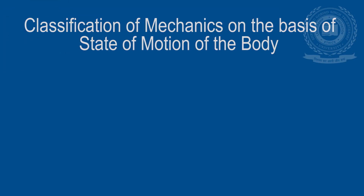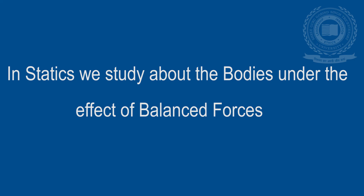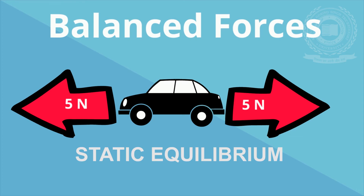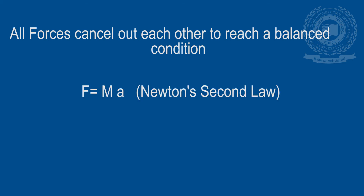State of motion of a body is another important criteria on the basis of which mechanics is classified as statics and dynamics. Dynamics is further divided into kinematics and kinetics. In statics, we study about bodies under the effect of balanced forces. Balanced forces means no net force and so no acceleration, and the body is said to be in static equilibrium. All the forces acting on the body cancel out each other and we get a balanced condition. This can be derived from Newton's second law: F = mA.